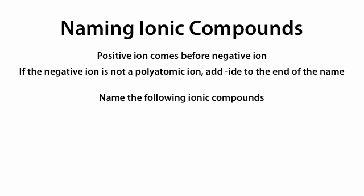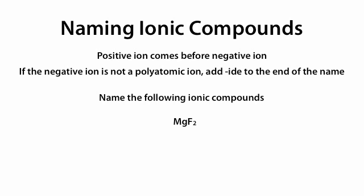Let's try some more examples. KI is formed from potassium and iodine, so it's called potassium iodide. We put -IDE at the end of the negative ion because it's not a polyatomic ion. MgF2 is magnesium fluoride. We add -IDE to the end of the name because F is not a polyatomic ion.